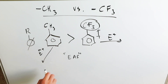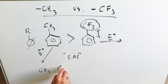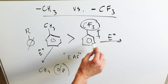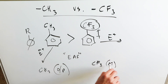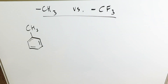The methyl group — the CH3 group — is known to be ortho/para directing, and the trifluoromethyl group will be meta directing. Let's talk about why this is the case. Looking at methyl benzene or toluene: it is electron donating, an ortho/para director, and it activates your benzene ring.